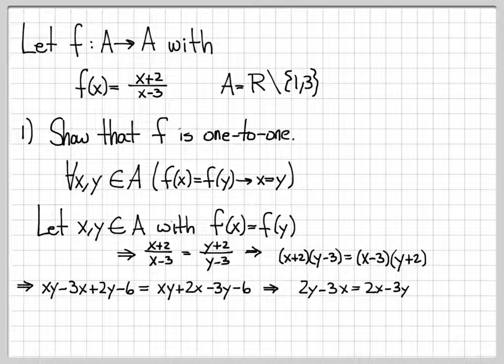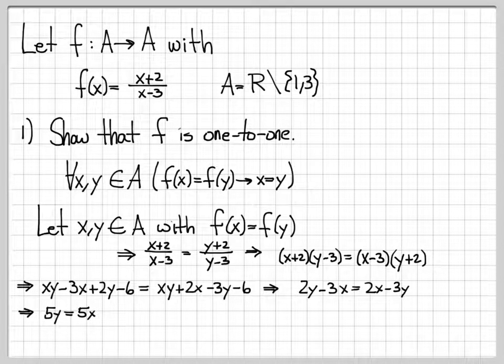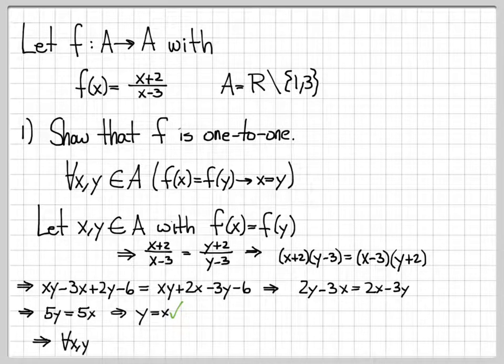Now we're almost there. Let's shift variables to the appropriate sides — put all the y's on the left by adding 3y to both sides, and all the x's on the right by adding 3x to both sides. We end up with 5y = 5x, and dividing both sides by 5 gives y = x. So we've shown that for all x, y in A, when f(x) = f(y), we have x = y. This is a one-to-one function.